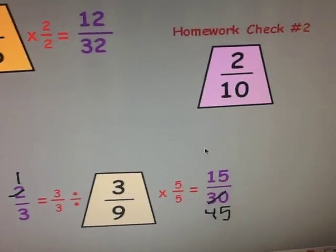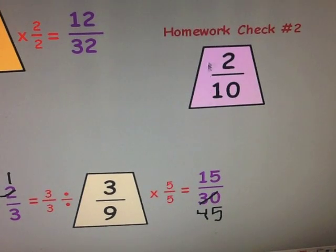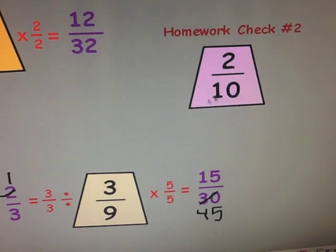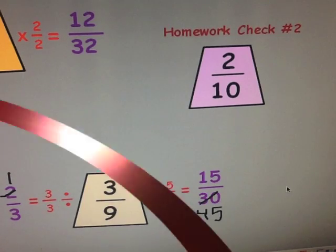Homework check number two: go ahead and find two equivalent fractions for two-tenths. You could use two different scale factors, or you could multiply and divide — it's up to you. There are various correct answers. Do this as homework check number two on your paper. Pause the video, and when you're ready, continue.